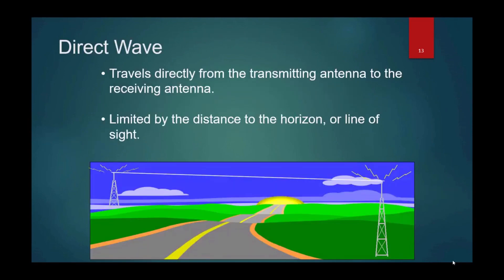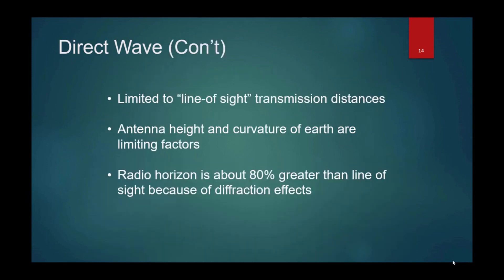Propagation paths. You can have a direct wave which travels directly from the transmitting antenna to the receiving antenna. We see this mainly in line of sight antennas. It's limited by the distance to the horizon or line of sight. The antenna height and curvature of the earth are also limiting factors. Radio horizon is about 80% greater than line of sight because of diffraction effects. The wave front as it moves towards the edge of that horizon will end up bending the front of that wave down and around over the curvature of the earth, but just for a little bit longer before it attenuates to the point where there's almost no signal left.